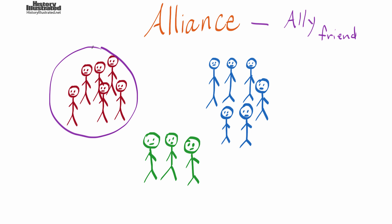For example, say you have this group of red people over here — if you notice there's six of them — and you have this blue group over here, and there's six of them, and the green group has only three of them. The red group has a lot of military and they're a pretty powerful group of people — they're all pretty tough — so they could easily come over and mess with the blue guys, or come over to the green guys and really do some damage, because they've only got three.